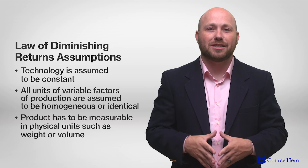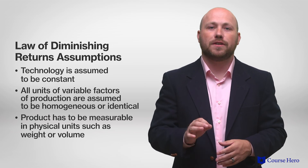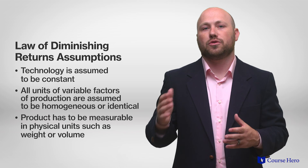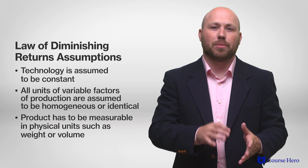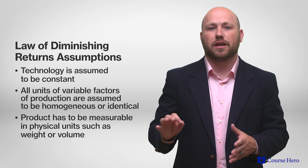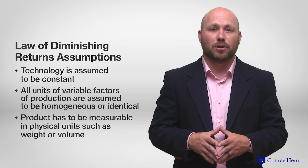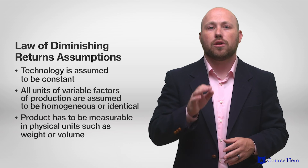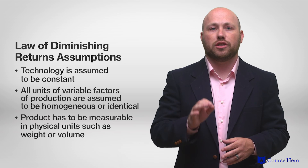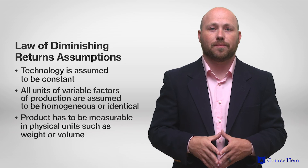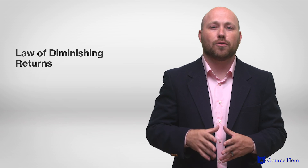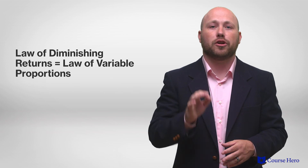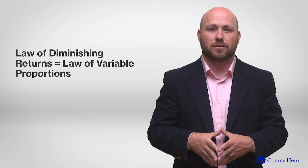Lastly, the product has to be measurable in physical units such as weight or volume. Changing one input and holding the other inputs stable in the short run results in a change in the ratio of inputs to each other. The law of diminishing returns is therefore also known as the law of variable proportions.